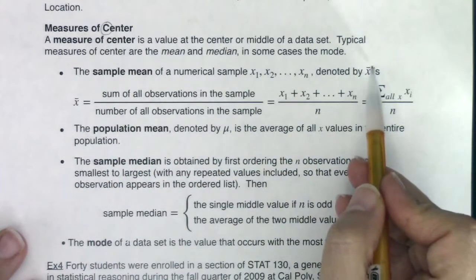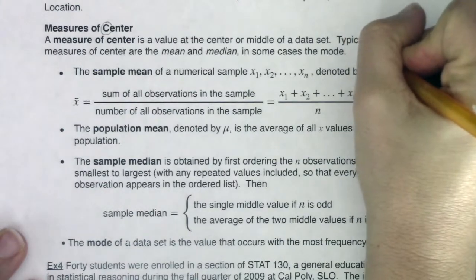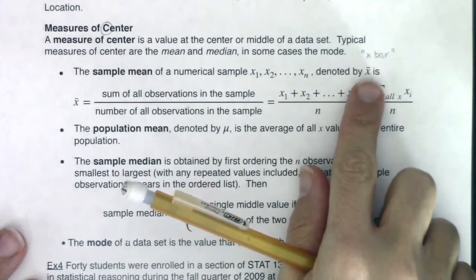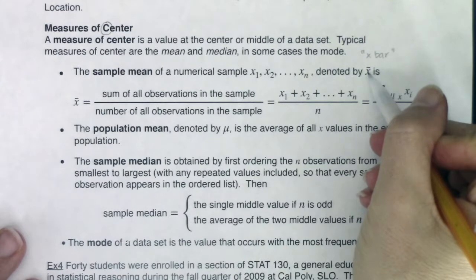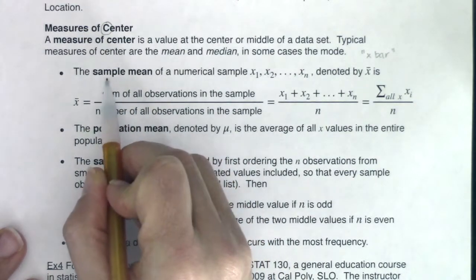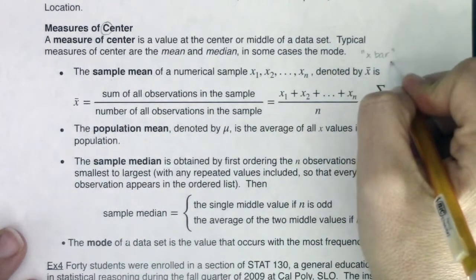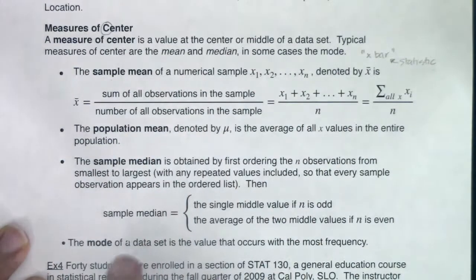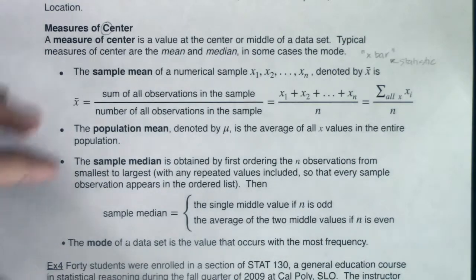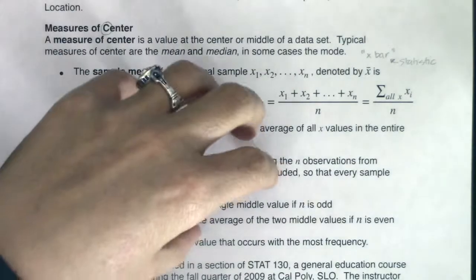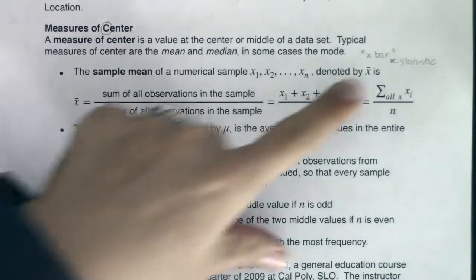So the sample mean is denoted by x-bar. That symbol stands for sample mean. Ask yourself: is this a statistic or is this a parameter? Well, if it's coming from a sample, it's going to be a statistic. Reviewing that concept from chapter 1 — statistics come from samples, parameters come from populations. So we've got the sample mean, we're going to call it x-bar.